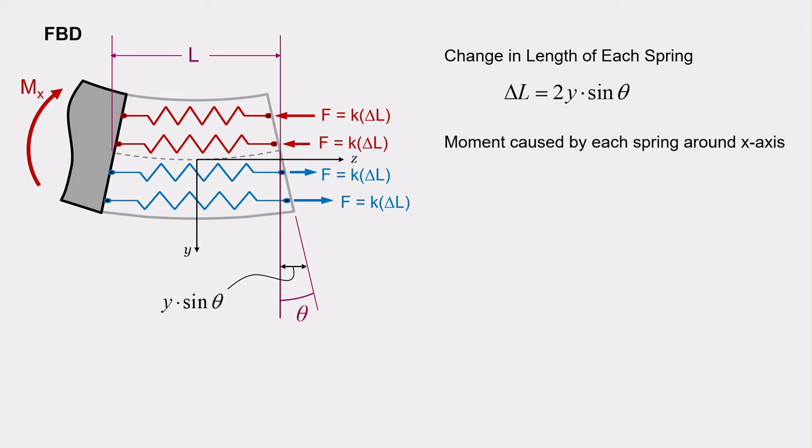Next, we can look at the moments caused by each spring force about the x-axis. In this case, the moment arm for each spring force is the y distance from the coordinate frame to the spring of interest. Thus, each spring will cause a moment about the x-axis equal to its spring force f multiplied by the moment arm y. We already established that f is equal to k times delta L, and that delta L is equal to 2y times sine theta. Rearranging these terms, we obtain that each spring causes a moment that is equal to 2 sine theta times k times y squared.